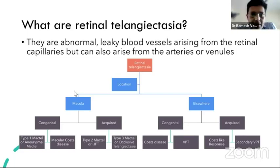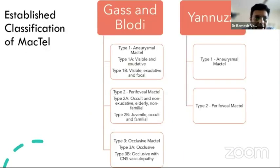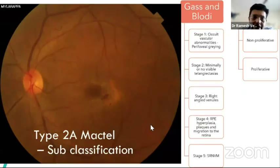Retinal telangiectasias are abnormal leaky blood vessels classified by location as macular or elsewhere. In macular telangiectasia, you have the congenital or Coats disease / aneurysmal MacTel type, and at the acquired variety, the more classical exudative MacTel or idiopathic juxtafoveal telangiectasia. There is also a type 3 called occlusive telangiectasia, a very rare entity. Gass and Blodi classified MacTel into three groups: type 1 aneurysmal, type 2 perifoveal, and type 3 occlusive.